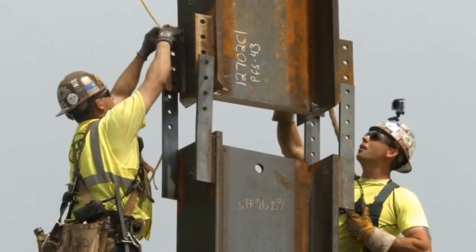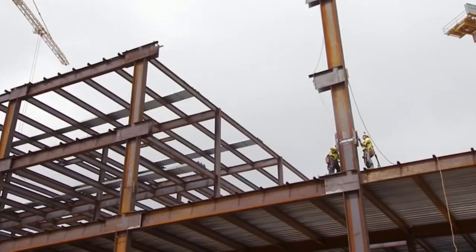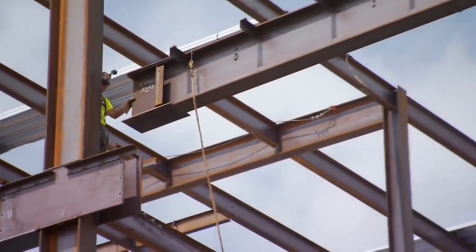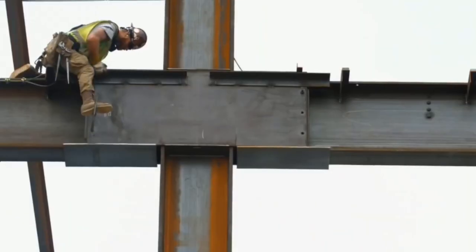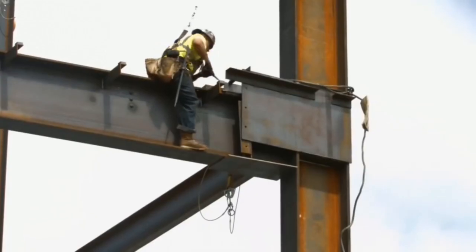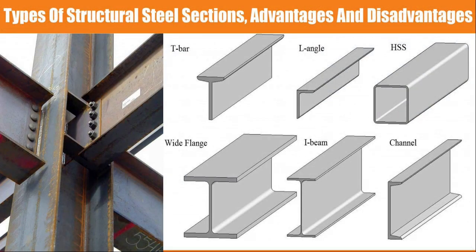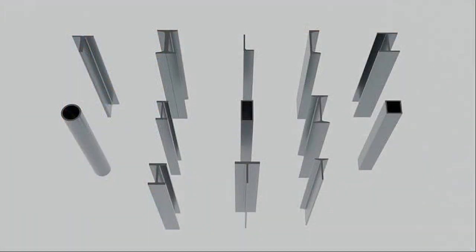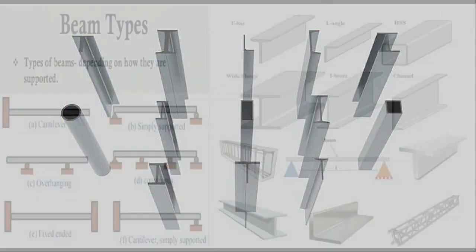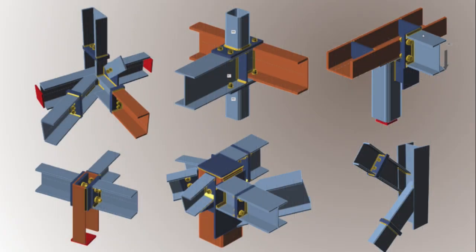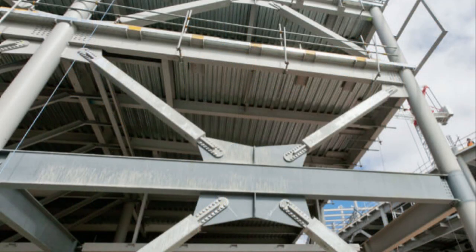Steel construction system is the most effective and fastest way of constructing buildings with greater heights. In this video you will learn types of steel, types of steel section, types of steel column, beam, slab, and wall, components for steel connection, and kinds of steel connection.